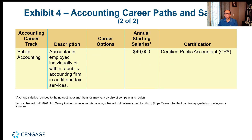You can also work in public accounting, where you work within a CPA firm and serve other businesses rather than belonging to a single company. These accountants provide audit and tax services. The starting salary is around $49,000 and tends to go up quickly. The key certification is the CPA — Certified Public Accountant — which is the most prestigious certification for accounting professionals. In the next video, we'll cover GAAP, or Generally Accepted Accounting Principles.